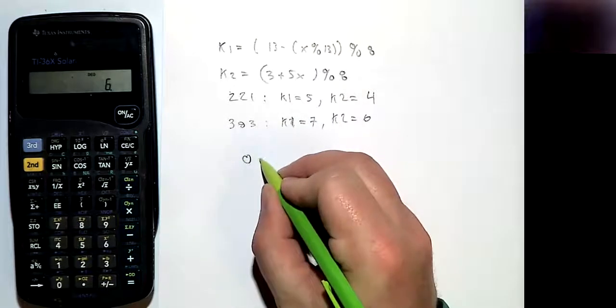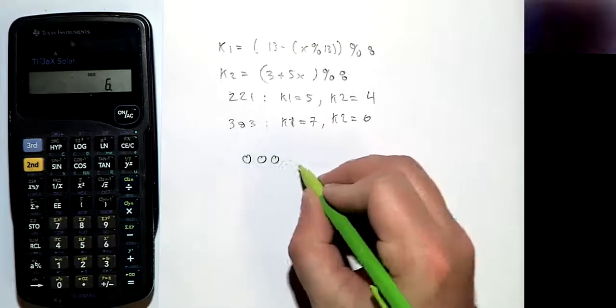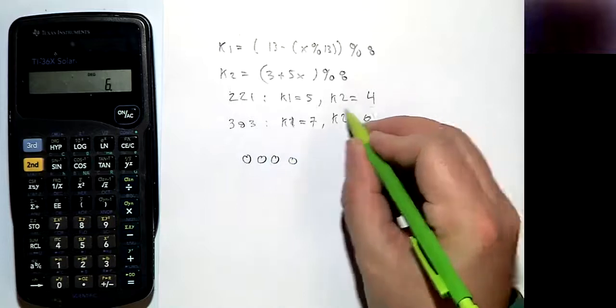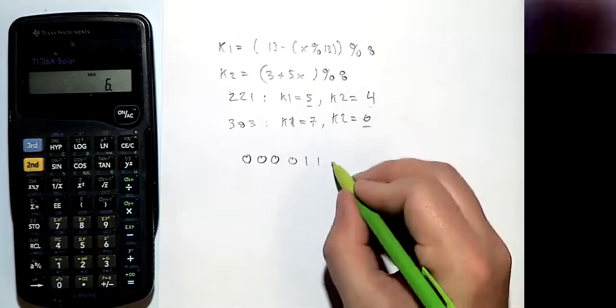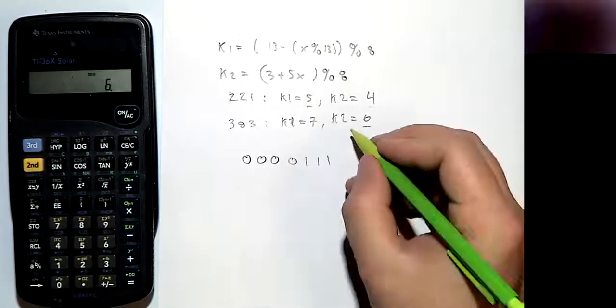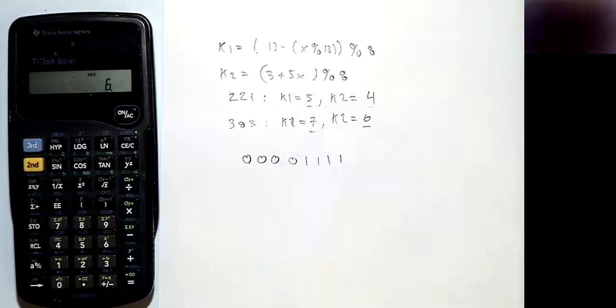So it'll be 0 is going to be 0, 1 is 0, 2 is 0, 3 is 0, 4 was found, so this will be 1. 5 was found, so this will be 1. 6 was found, so that will be 1. 7 was found, so that will also be 1.